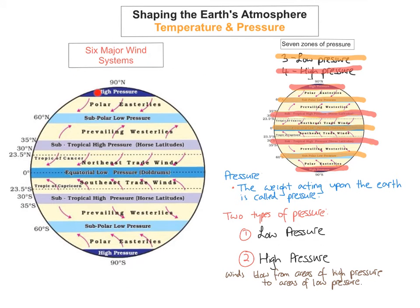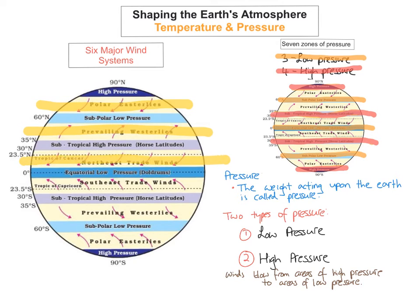Now we're going to look at the six major wind systems. We've seen the seven zones of pressure — three areas of low pressure and four areas of high pressure. The six major wind systems are shown in the diagram: three in the northern hemisphere and three in the southern hemisphere.